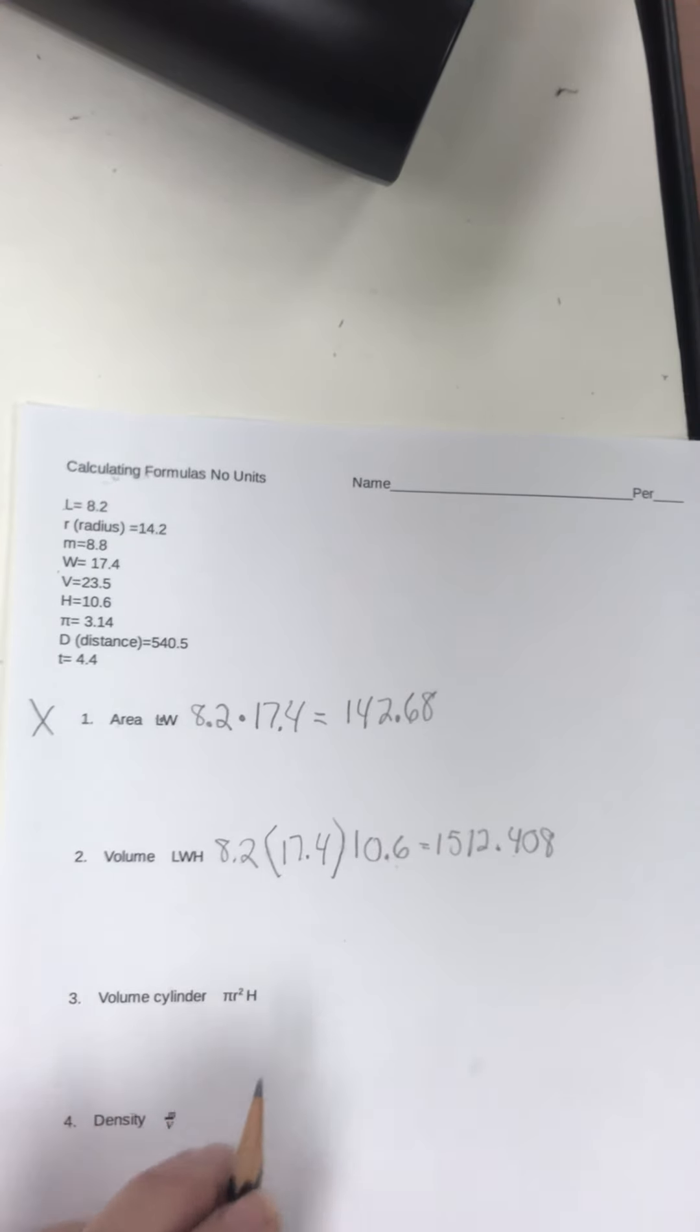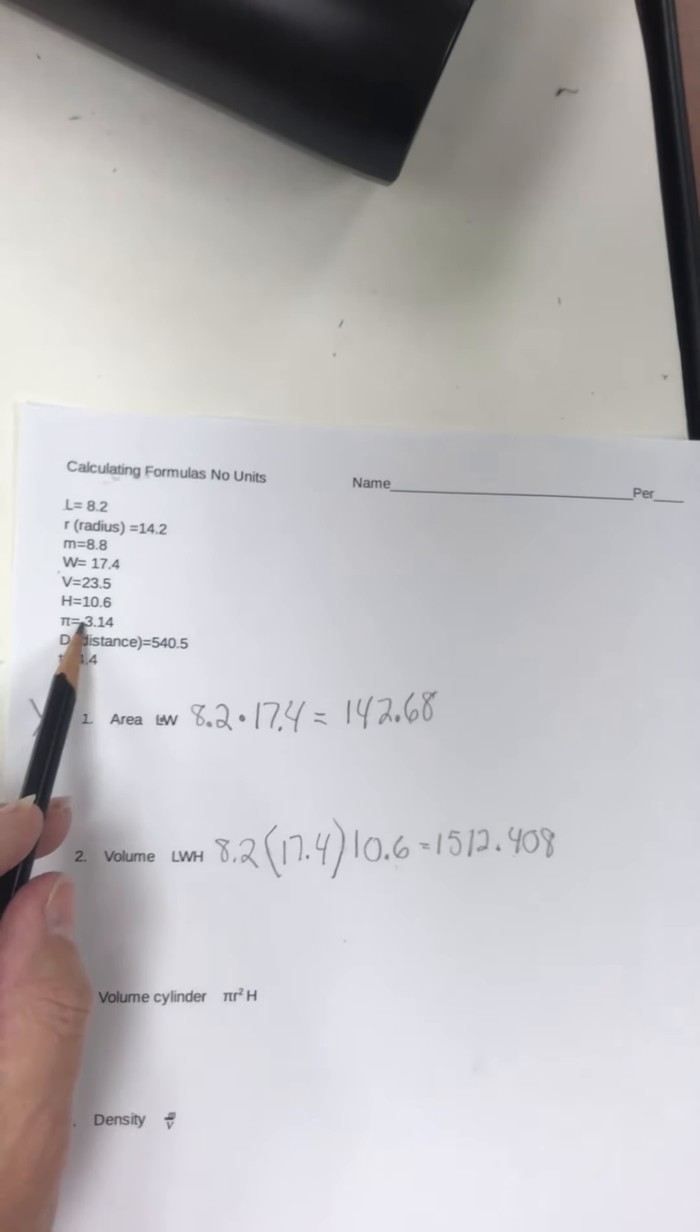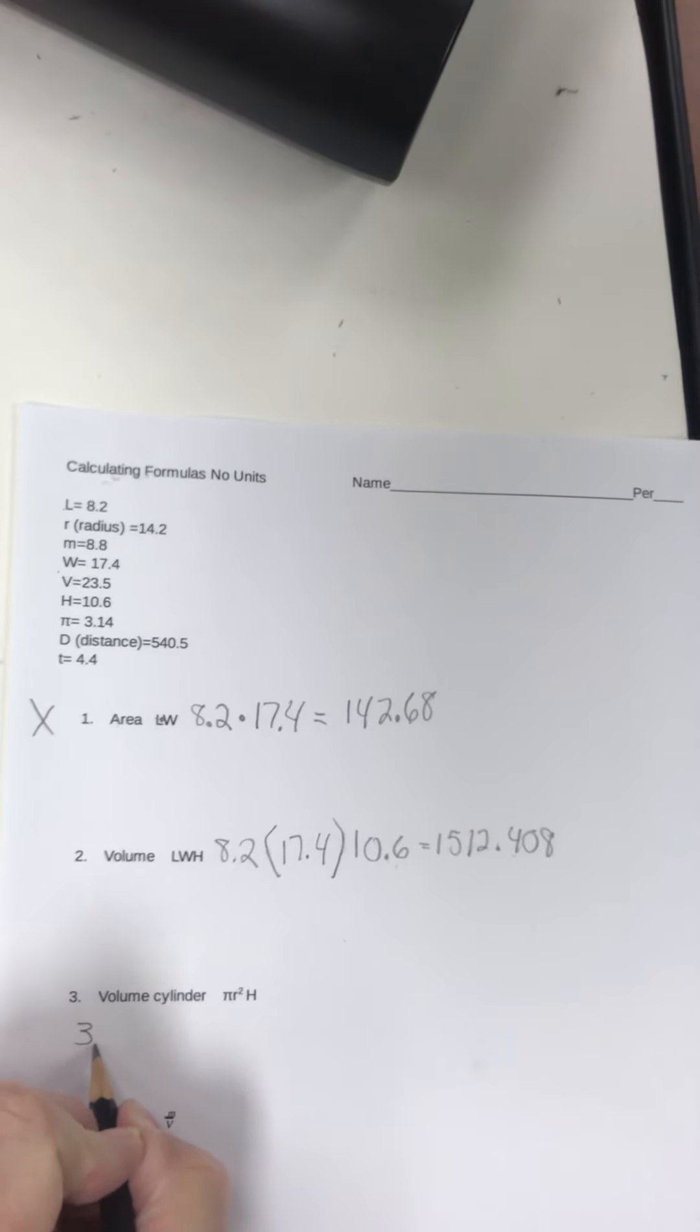The next one is pi R squared H. It tells you what pi is, but you should know that. That's something you should know. Pi is 3.14. Pi is actually the number. This works on every circle. How many times, I can't remember if it's the radius or diameter, fits around the circumference of the circle. And it does it 3.14 times, no matter how big the circle is.